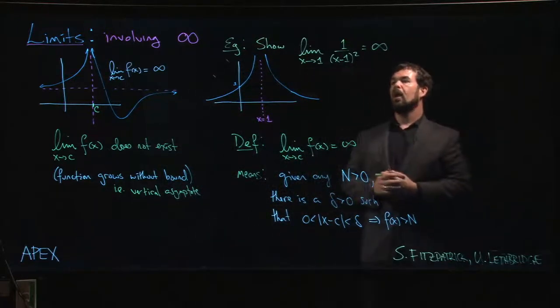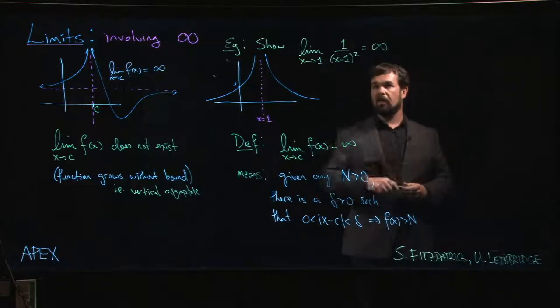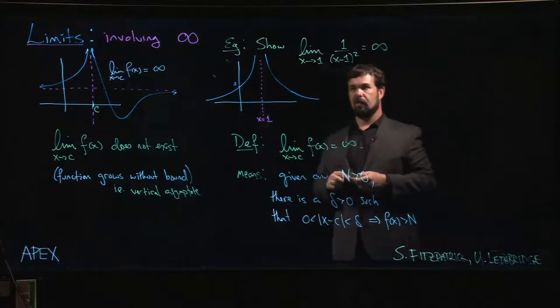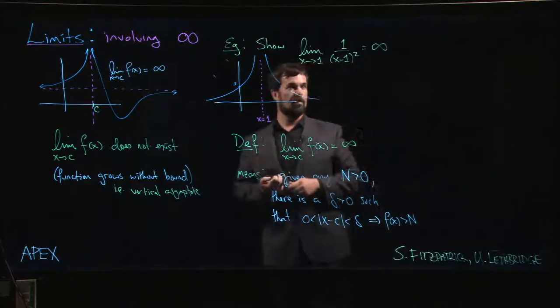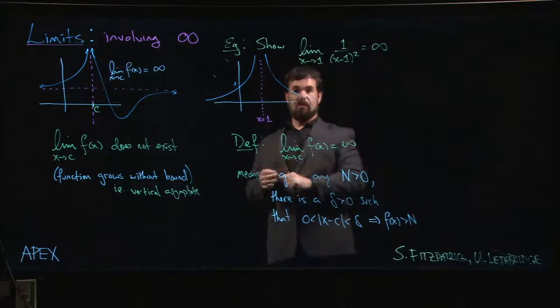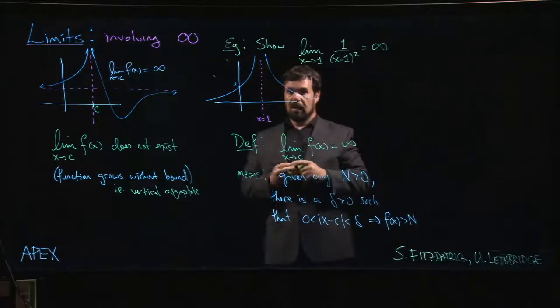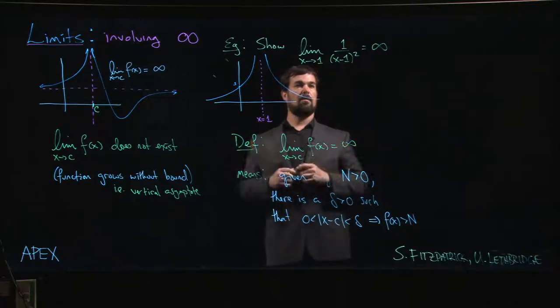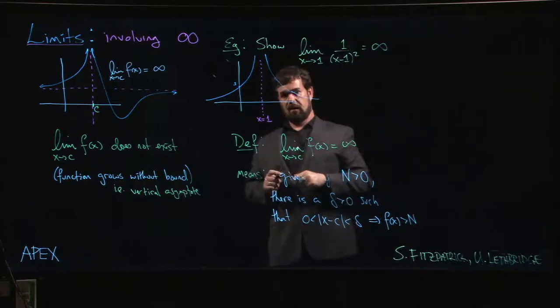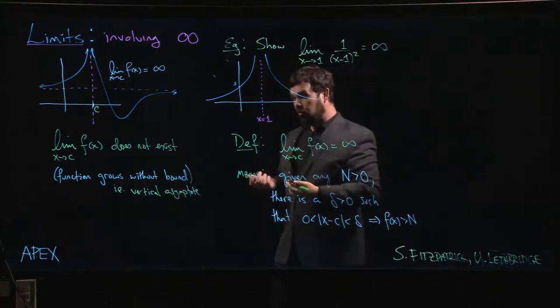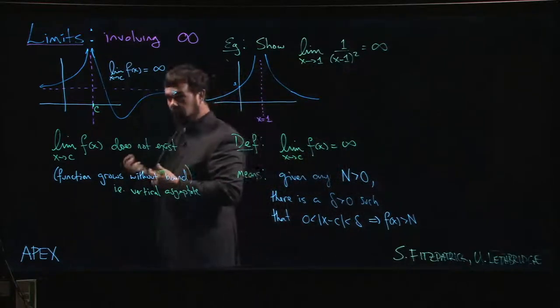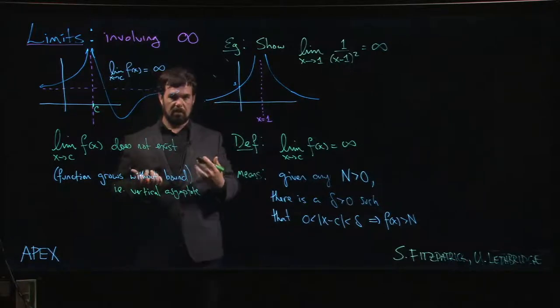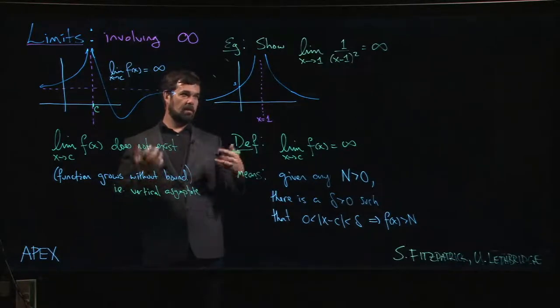We can see by looking at the function, looking at the expression that defines the function, that if we try to do a direct substitution we do have this division by zero going on. This is not like the indeterminate forms that we looked at before where we had zero divided by zero. Here we would have one divided by zero, so the numbers that we're dividing by are getting smaller and smaller and smaller while the numerator is remaining unchanged, and so that means the overall thing is getting much bigger.